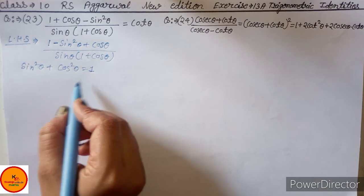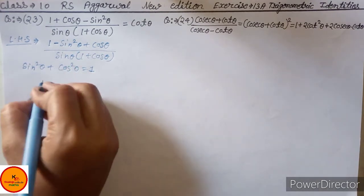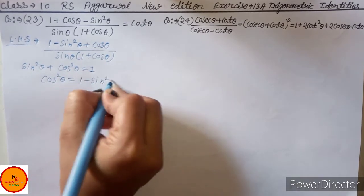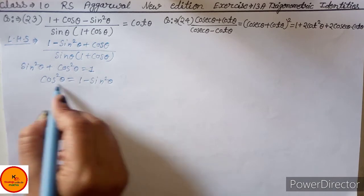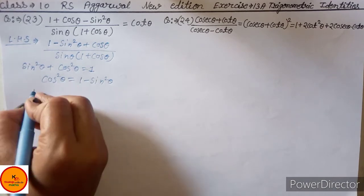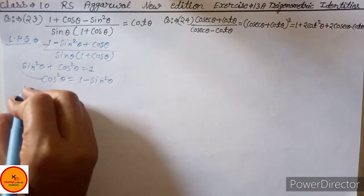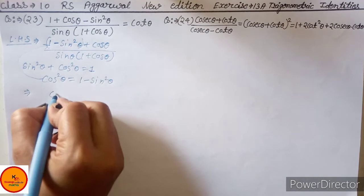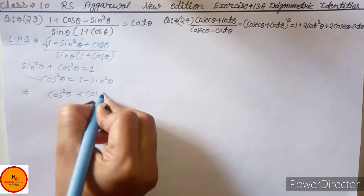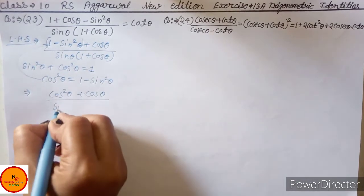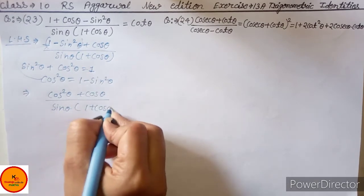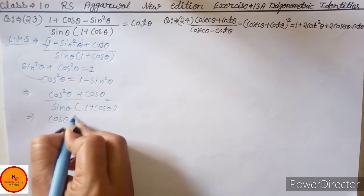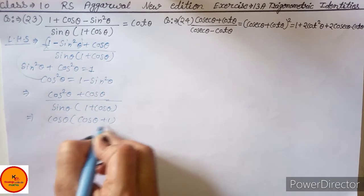What we can do here is factor it. We will have cos square theta plus cos theta in the numerator, upon sin theta and 1 plus cos theta in the denominator. Now you can see cos theta is common, so we take cos theta common. We write cos theta times (cos theta plus 1).